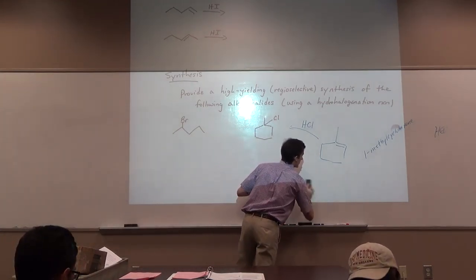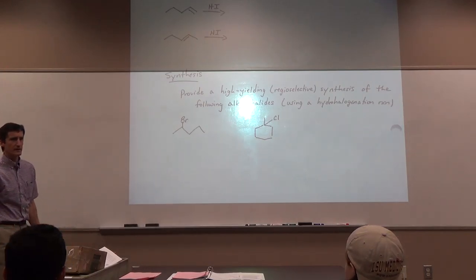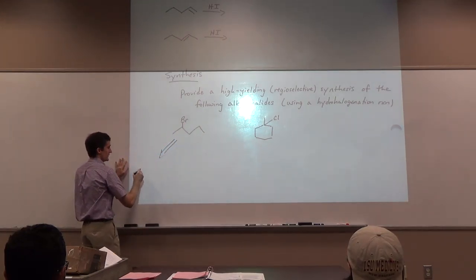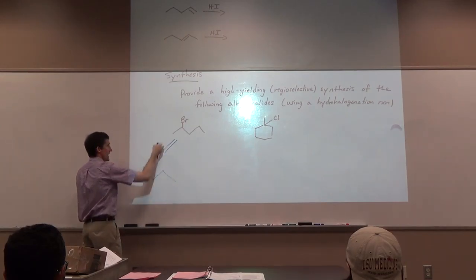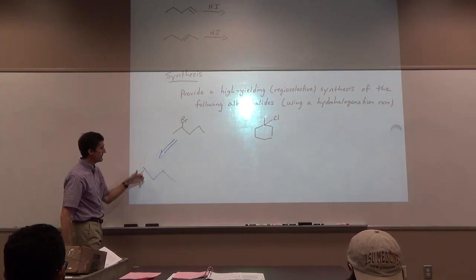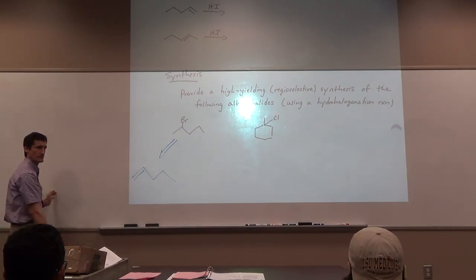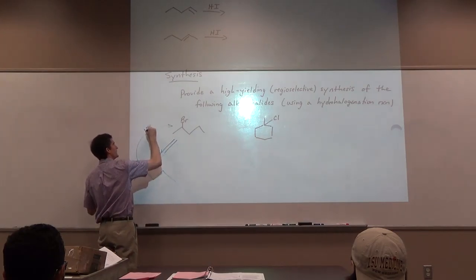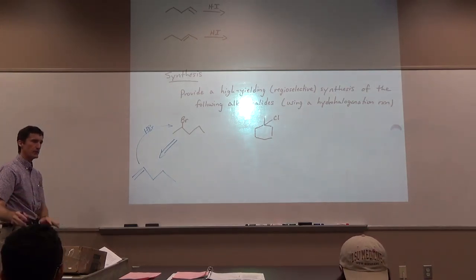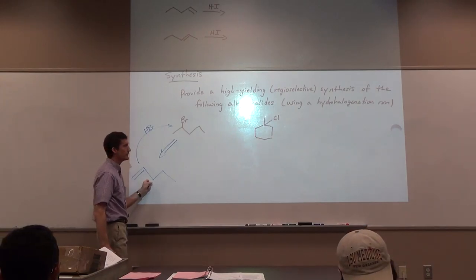Questions on those? I didn't show the retrosynthetic arrow. A lot of times when you're doing synthesis, you go backwards using a double-line arrow — called a retrosynthesis or retrosynthetic arrow — to indicate you're going back to the alkene starting material. Coming forward, you would say: react that alkene with HBr to go forward. So the alkene is actually the starting point.